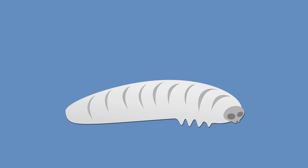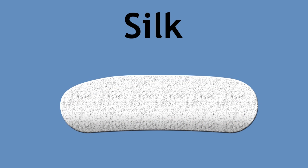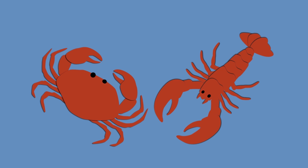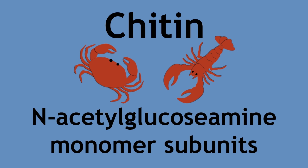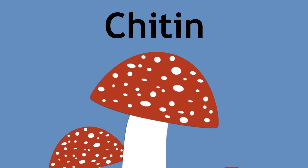Moving on to other living organisms, silkworms can produce their own silk protein to spin their cocoon. This is still done on a large scale in some countries; however, some people find this unethical as the larvae inside the cocoon are killed during the process. The exoskeleton, or shells, of crustaceans such as crabs and lobsters are formed from chitin. Chitin is a polymer made of repeating N-acetylglucosamine monomer subunits whose structure is derived from glucose. Interestingly, chitin is also found in the cell walls of fungi, most notably mushrooms.